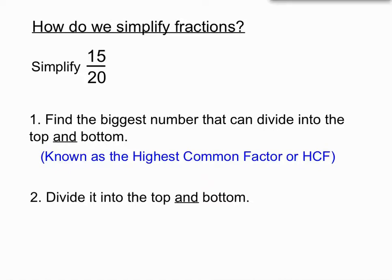In this case, once we've found the number that can divide into both, we do the division. We divide it into the top and bottom, and we get a simpler fraction.